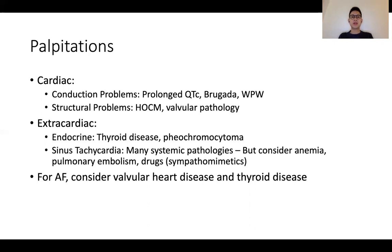The next group for palpitations would be structural problems, and I think hypertrophic cardiomyopathy (HOCM) and valvular pathology would be important to consider. For the extracardiac group, endocrine disorders like thyroid disease and phaeochromocytoma are probably the commonest causes of palpitations in the context of a station 5 exam. Palpitations can also be due to sinus tachycardia, and many disorders can cause this. However, a few conditions are important: anemia, pulmonary embolism, and drugs such as sympathomimetics and beta agonists are common culprits. In the context of atrial fibrillation, valvular heart disease and thyroid disease are two important considerations because they often come with physical signs, making them good cases for a station 5 exam.